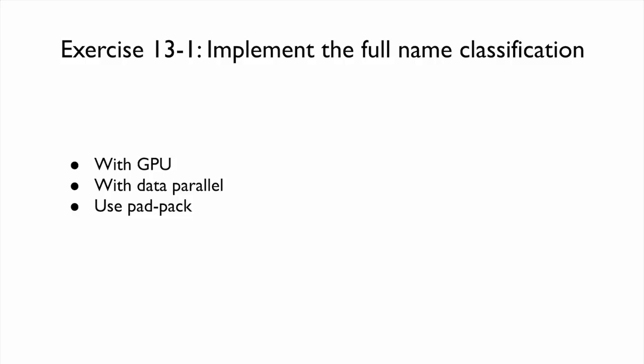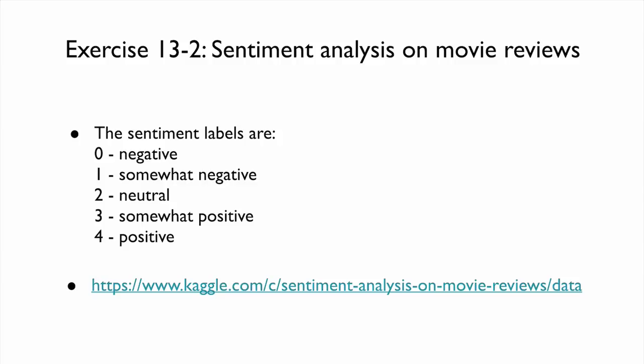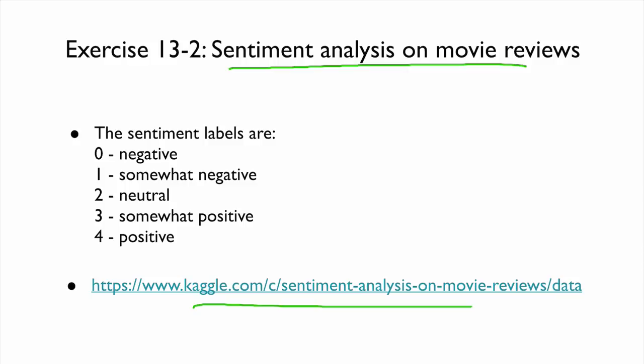For exercises, you can try everything covered in this lecture — using GPU, data parallelism, and pack-padded sequences to implement name classification. Using the same kind of model, you can do a lot more. For example, you can apply this model to sentiment analysis on movie reviews, which is actual data used in Kaggle. You can download the data and predict sentiments from one of five labels for a given review.